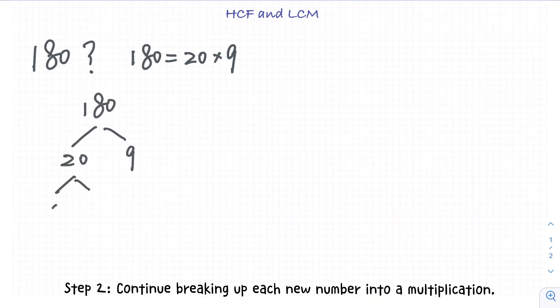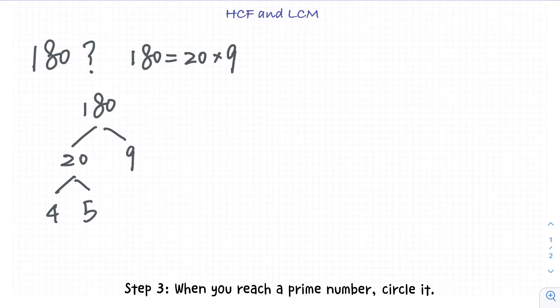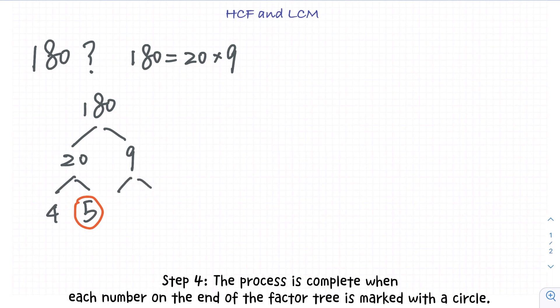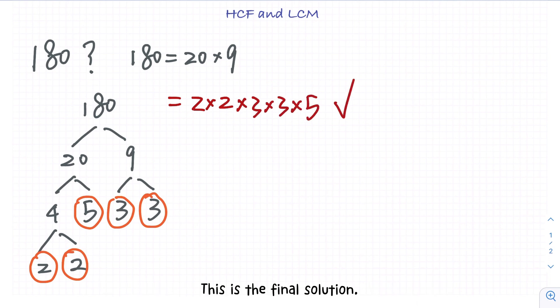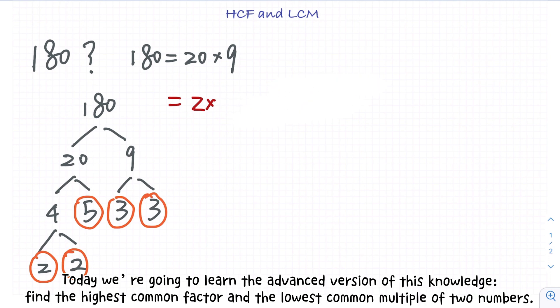Step 2: continue breaking up each new number into a multiplication. Step 3: when you reach a prime number, circle it. Step 4: the process is complete when each number on the end of the factor tree is marked with a circle. Check your answer by multiplying the numbers together. This is the final solution.